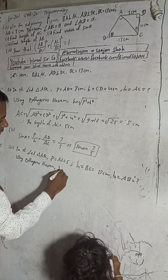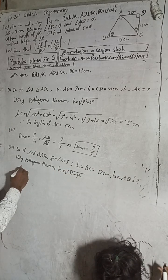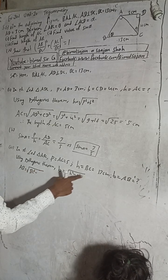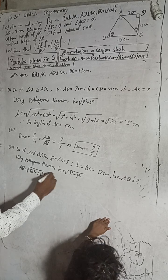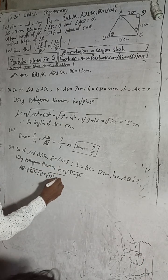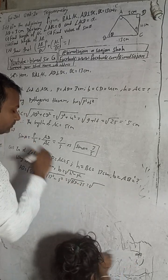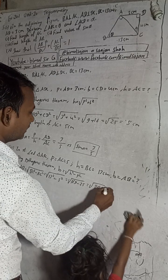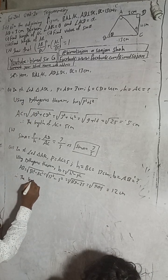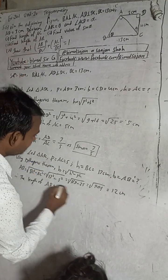AB = √(BC² − AC²) = √(13² − 5²) = √(169 − 25) = √144 = 12 cm. Therefore the length of AB is equal to 12 cm.